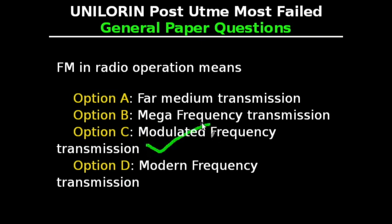FM denotes frequency modulation, which uses a change in frequency to encode information. Modulation is the variation of some property of the radio carrier in a manner that conveys information. So the answer is Option C.